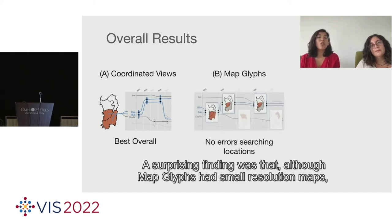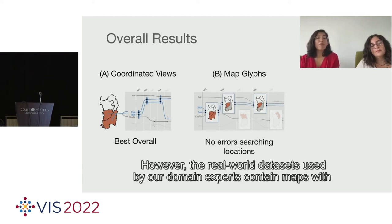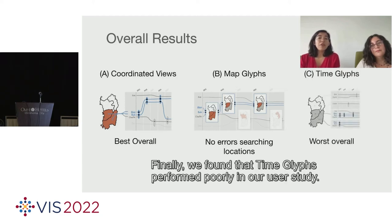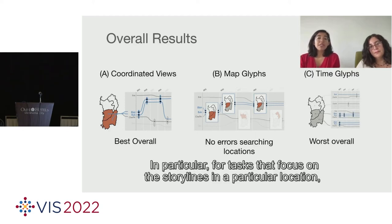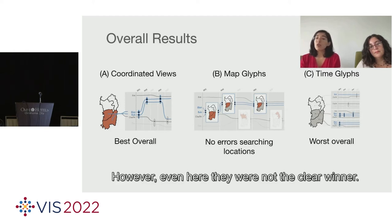Our domain experts confirmed this intuition and asked for a play button to have automatic scrolling playback. A surprising finding was that although Map Glyphs had small resolution maps, there were no errors by participants of our user study when searching locations in them. However, the real-world dataset we used by our domain experts contained maps with more than 1,000 locations, which made this design extremely hard to use. Finally, we found that Time Glyphs performed poorly in our user study. In particular, for tasks that focus on the storylines in a specific location, Time Glyphs should have had an advantage as they split the data per location. However, even here they were not the clear winner.